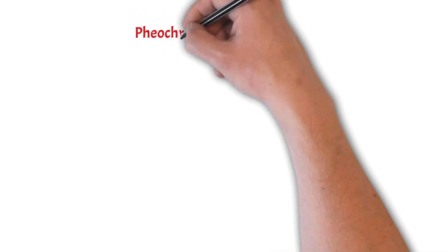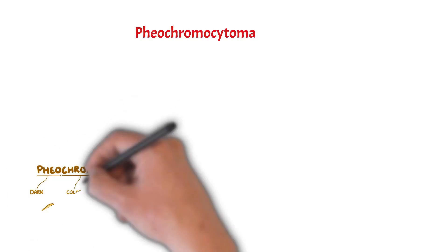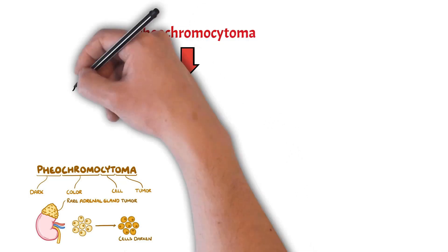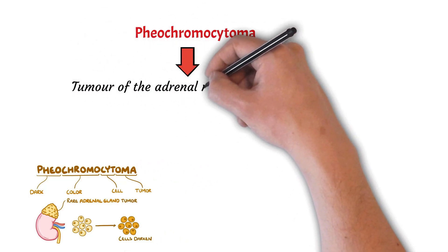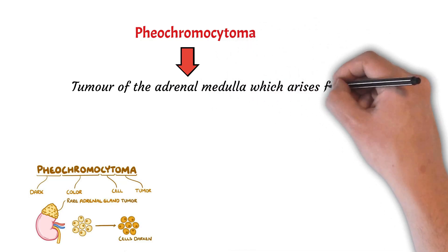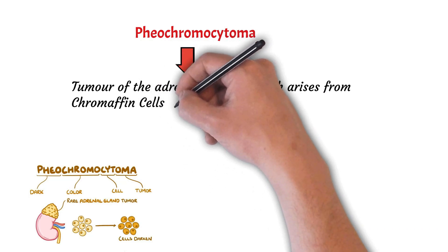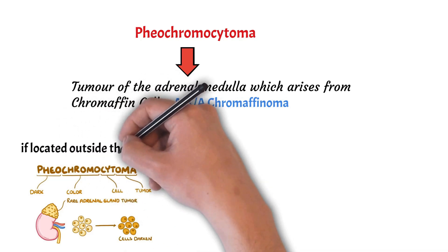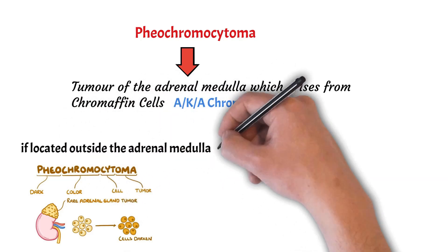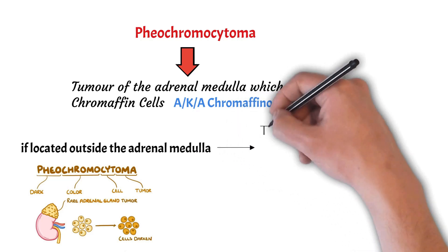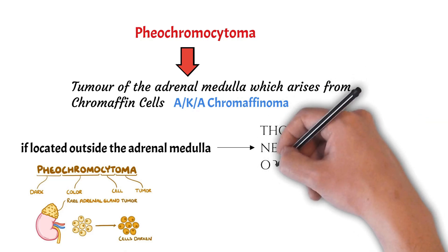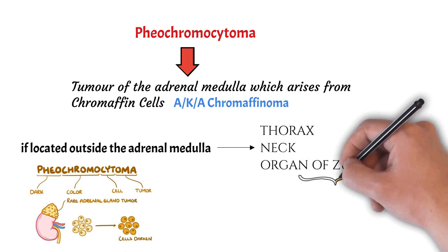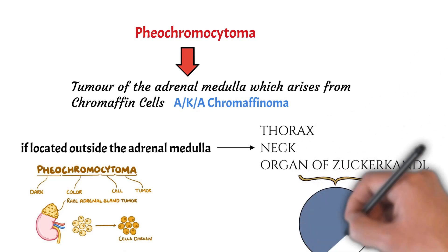Pheochromocytoma - what is pheochromocytoma? This is nothing but a tumor of the adrenal medulla which arises from the chromaffin cells, so it is also known as chromaffinoma. Mostly it is located inside the adrenal medulla, but if it is present outside it - in the thorax, neck, and organ of Zuckerkandl - it is known as paraganglioma.